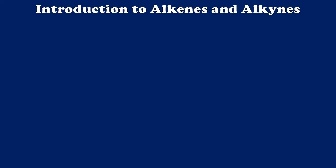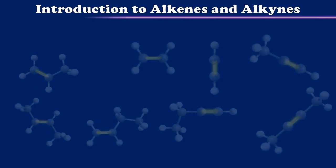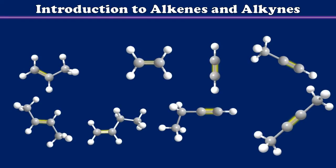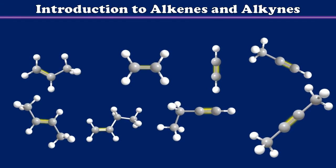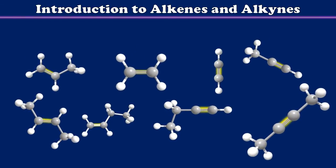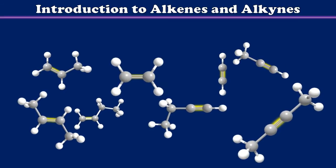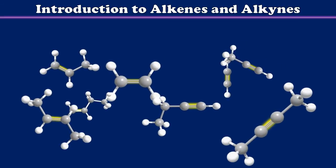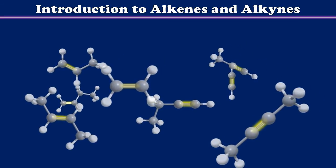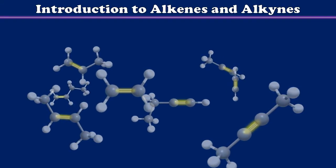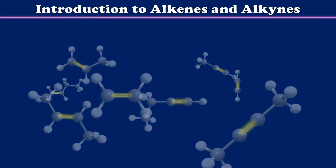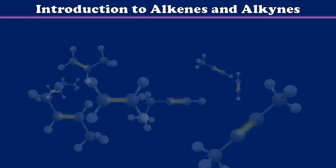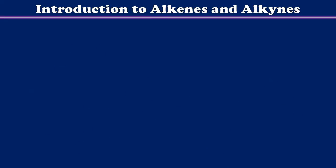Welcome to a brief introduction to alkenes and alkynes. I'm Professor Davis from ChemSurvival.com and the YouTube channel ChemSurvival. Today we're going to talk about these types of compounds — alkenes and alkynes. We call these unsaturated hydrocarbons because they contain multiple bonds, either doubles or triples, highlighted here in yellow. That gives them some different properties and causes us to treat them differently when it comes to naming them.